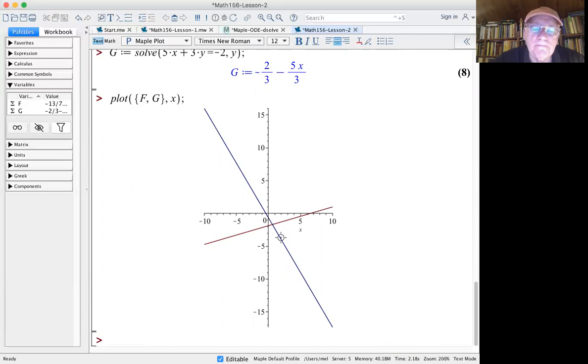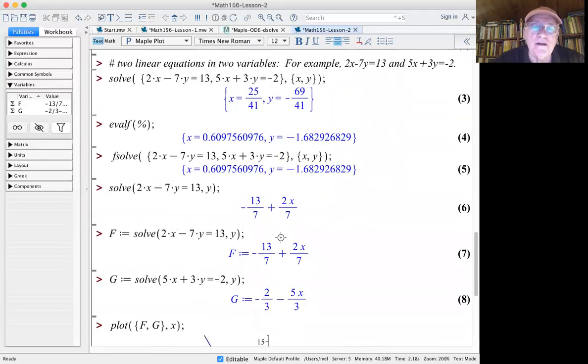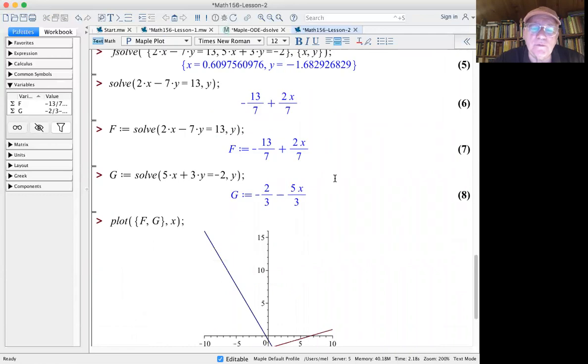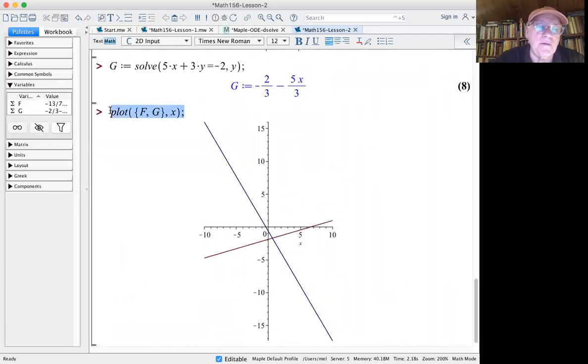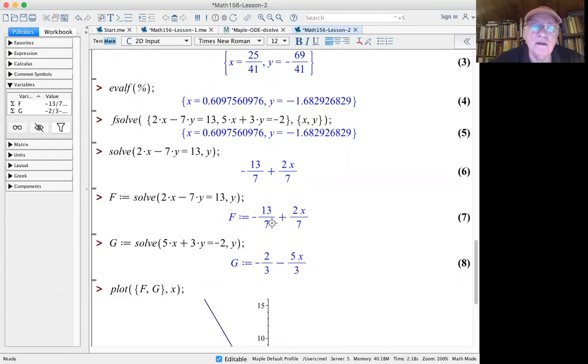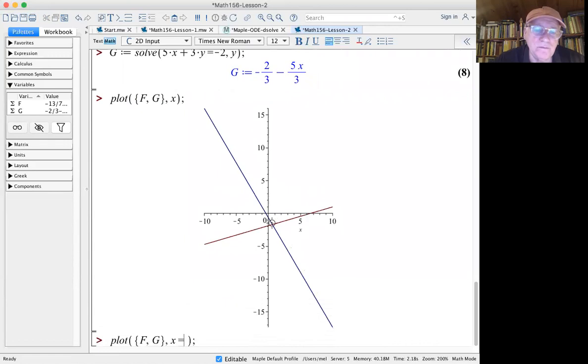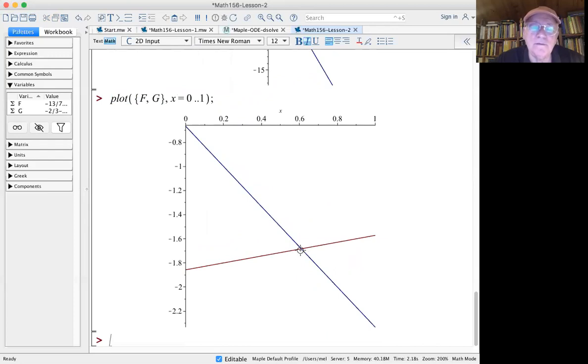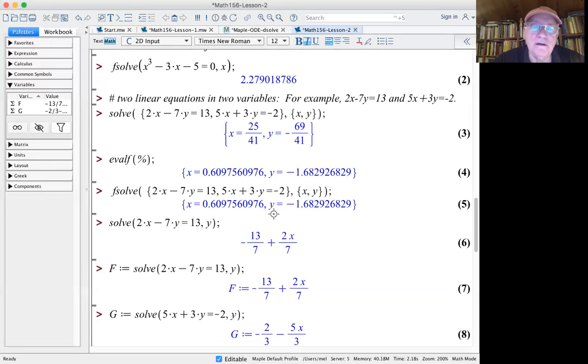This is the point where the two lines cross. What are the coordinates of that point? Well, we know what they are. We just calculated them. 0.6 and minus 1.68. Let's just blow that up so we can actually see it ourselves. So instead of graphing x from minus 10 to 10, let's graph x from 0 to 1. There's the... That's what it looks like. And you can see the x coordinate is about 0.6. And the y coordinate is about minus 1.7. Just what we got here.